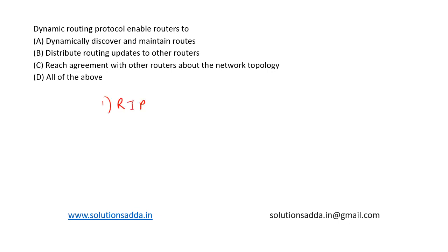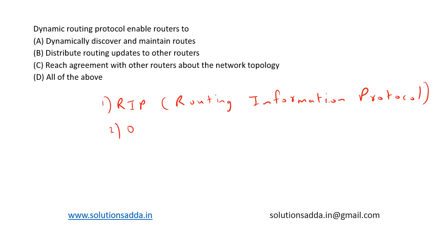There are different dynamic routing protocols. Some examples are RIP, that is Routing Information Protocol, and OSPF, that is Open Shortest Path First. These are some examples of dynamic routing protocols.